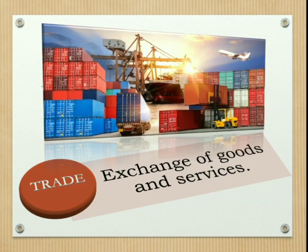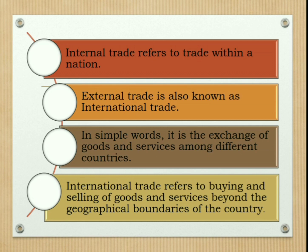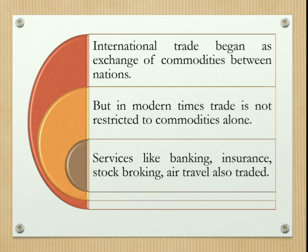Trade means exchange of goods and services. Trade can be broadly classified into two types: internal and external trade. Internal trade refers to trade within a nation. External trade is also known as international trade, and international trade is the exchange of goods and services among different countries. It can also be defined as buying and selling of goods and services beyond the geographical boundaries of a country. International trade began as exchange of commodities between nations.